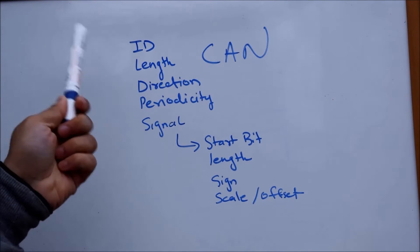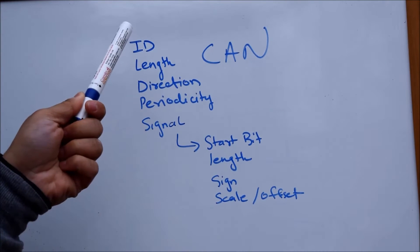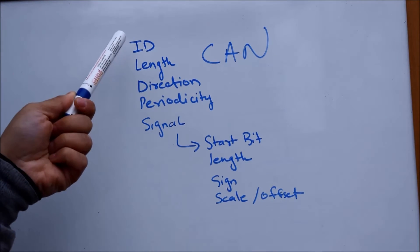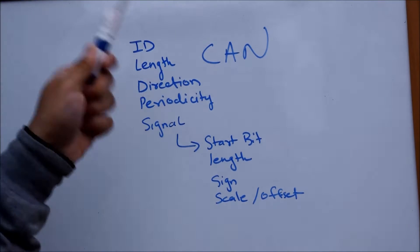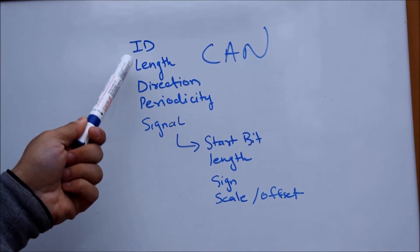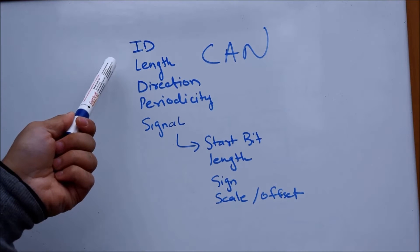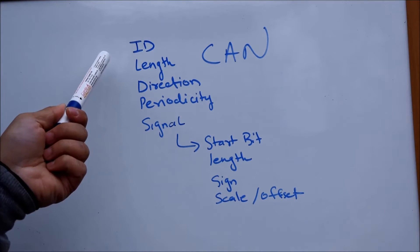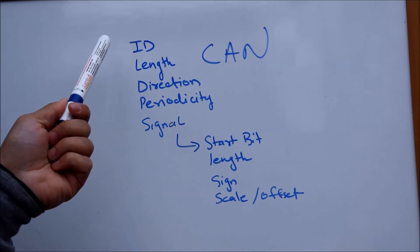This is how a particular CAN message is structured. All the ECUs communicate through this particular ID for this CAN message. Then the message has a set length. The message can be 8 bytes long, 6 bytes long, 7 bytes long - it really depends on the auto manufacturer.